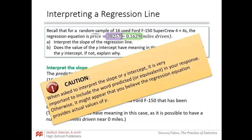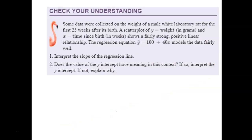When asked to interpret the slope or the y-intercept, it's very important that we use the word 'predicted' or something equivalent in your response. This is a big source of point loss on the AP exam — if they aren't certain you understand that the regression equation is a prediction and not an actual value, they will not give you points.